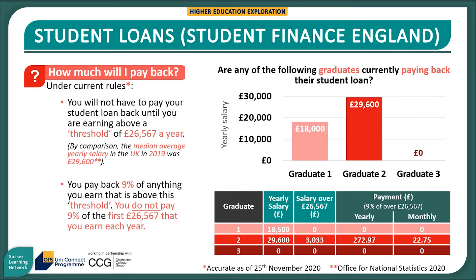The next question is: how much is graduate two actually paying back? They are paying back 9% of anything above the threshold, which is £3,033 a year. So 9% of £3,033 is £272.97 — this is how much they pay back each year, working out at £22.75 a month. The main take-home message is that you only pay your student loan back when you are in a position to do so, and when you do, it is an affordable amount each month.